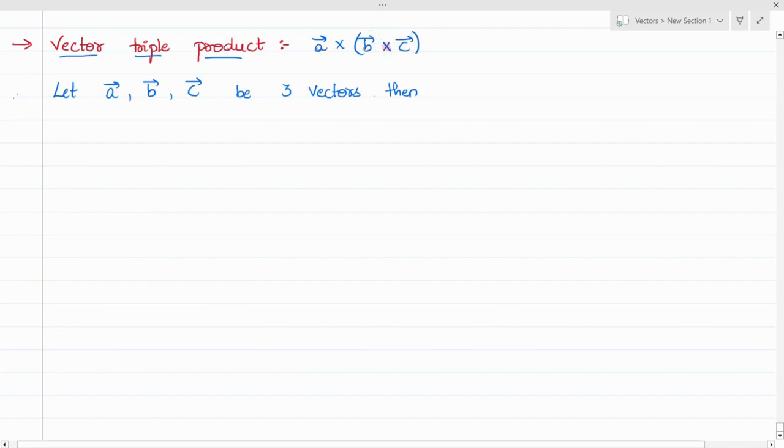Both the two operators are cross operators. Now if A, B, C are the three vectors, then the formula for vector triple product is A dot C times B minus A dot B into C.